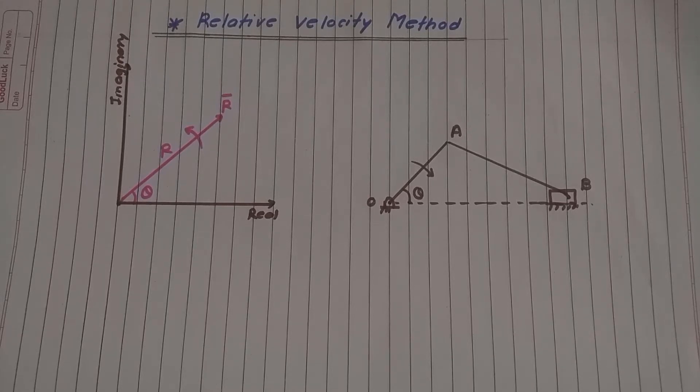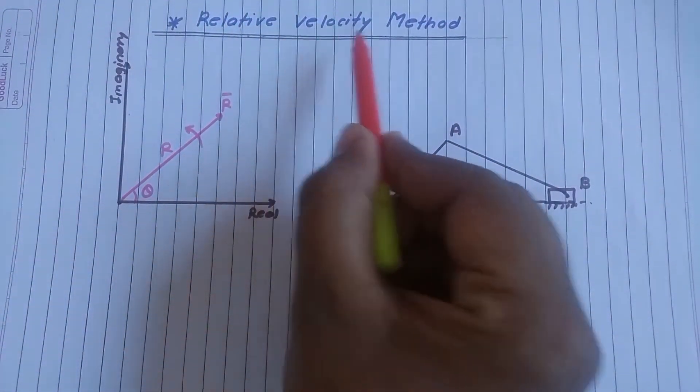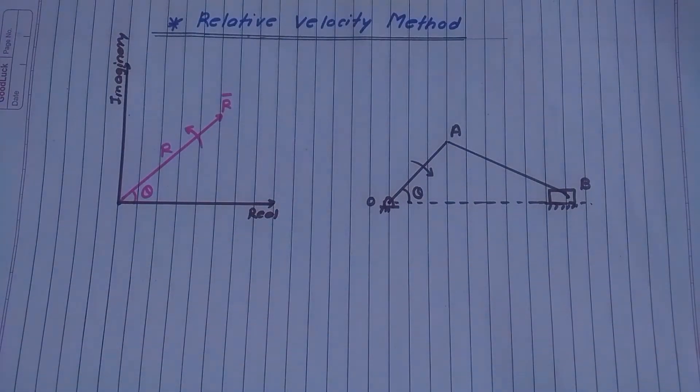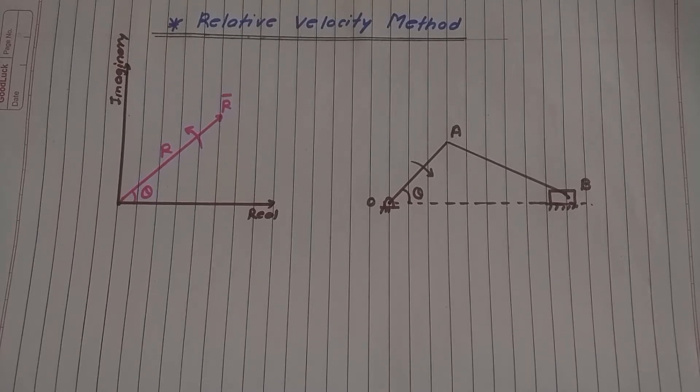In today's lecture we are going to discuss the Relative Velocity Method. It is one of the most commonly used methods to find velocity of any point on a given link in a given mechanism. For all types of configurations this method can be used to find the velocity.